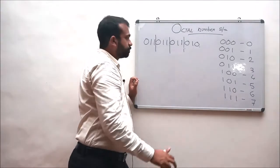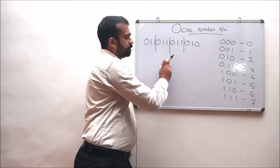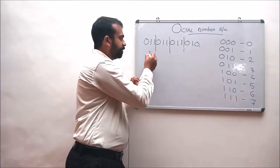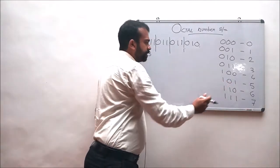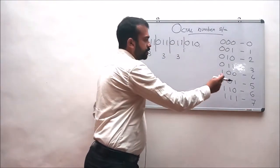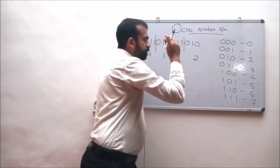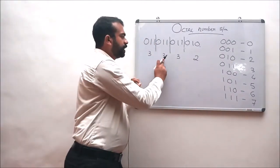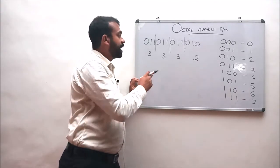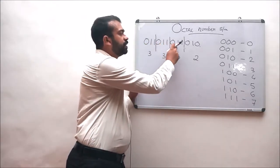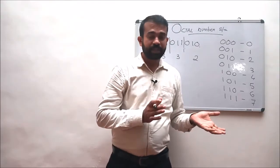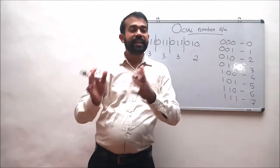Now go through this chart. The data 011 has an octal equivalent of 3. Again, 011 has an octal equivalent of 3. Then 011 has an octal equivalent of 3, and 010 has an octal equivalent of 2. So the octal representation 3332 is coded or read in an electronic or computer device as 011 011 011 010. This octal number system can be used as an intermediate representation between the binary number system and the decimal number system.